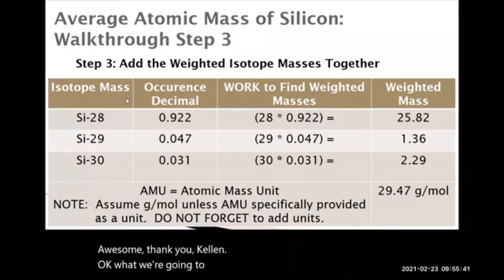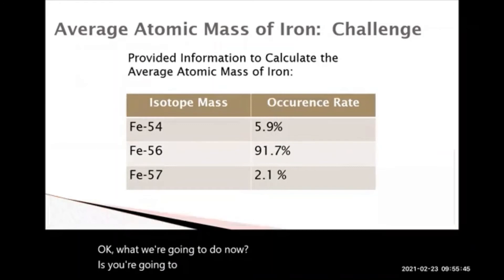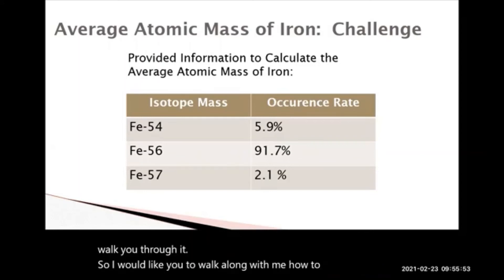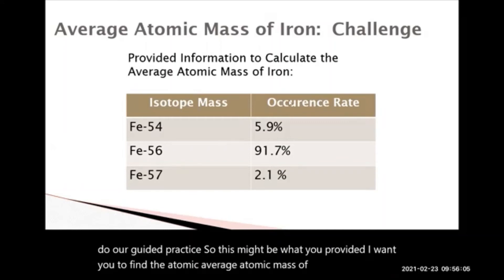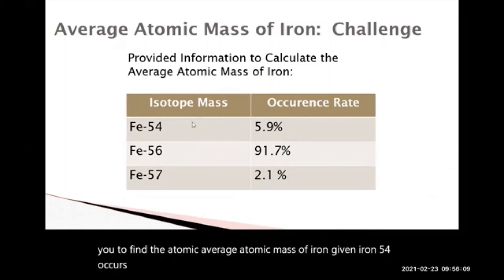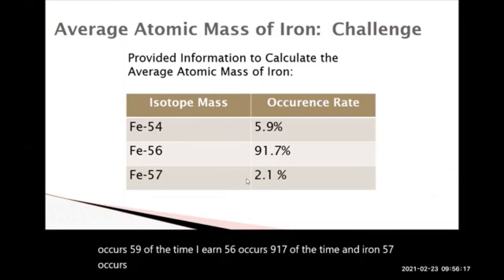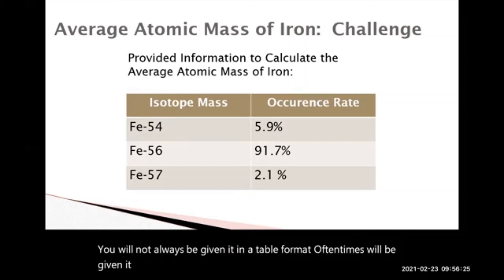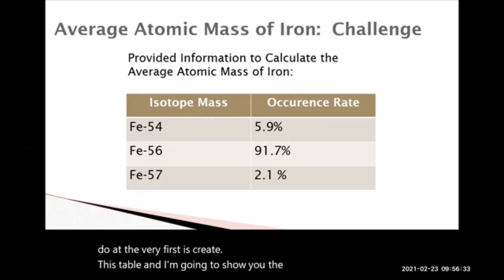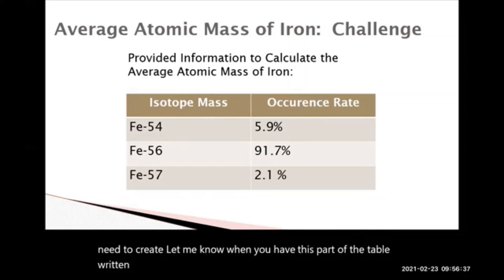Now you're going to try one of these and I'm going to walk you through it before we do our guided practice. Find the average atomic mass of iron, given: iron-54 occurs 5.9% of the time, iron-56 occurs 91.7% of the time, and iron-57 occurs 2.1% of the time. You will not always be given it in a table format — oftentimes you'll be given it as a word problem. What you need to do first is create a table. Let me know when you have this part of the table written down.